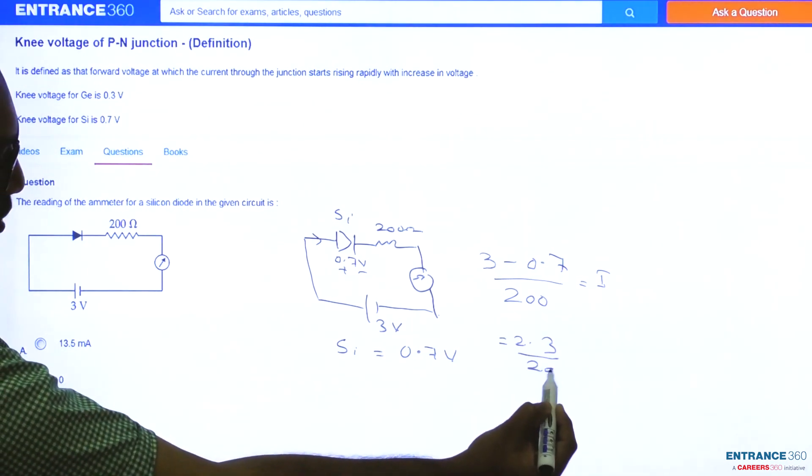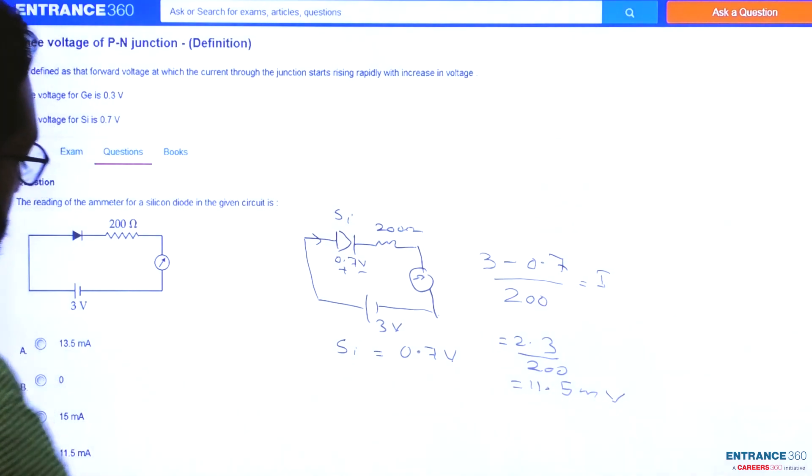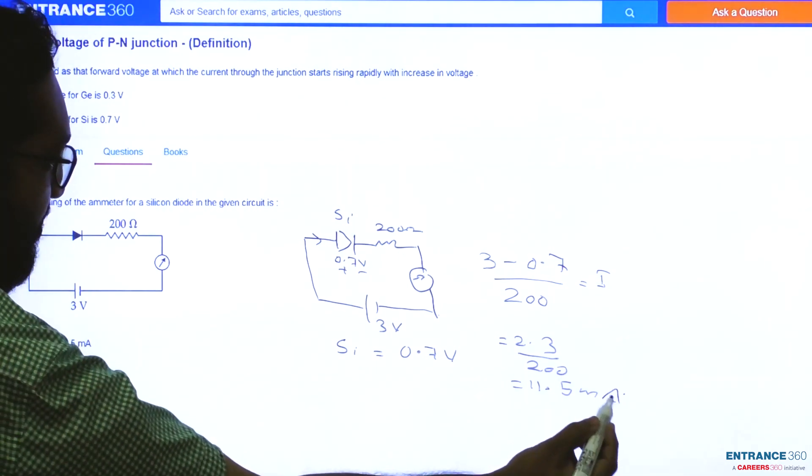divided by 200, which is equal to 11.5 milliamperes. Sorry, it is current, so it will be milliamperes.